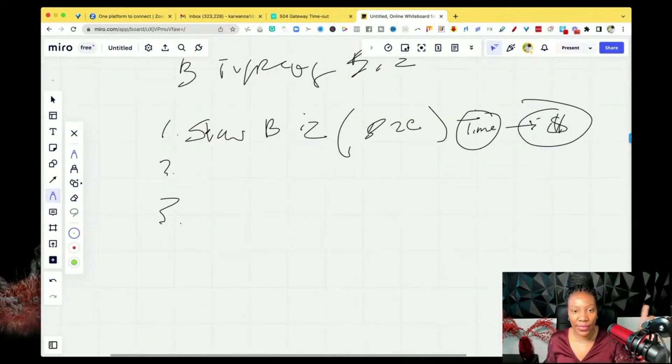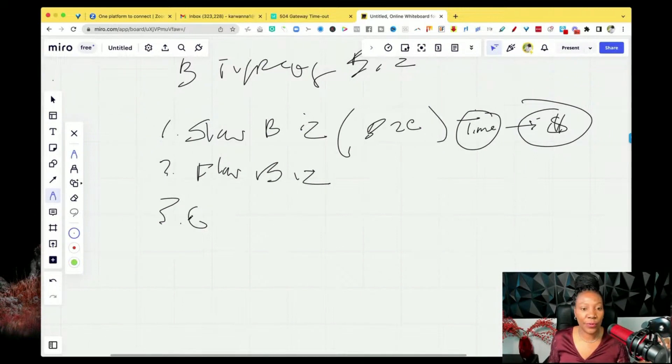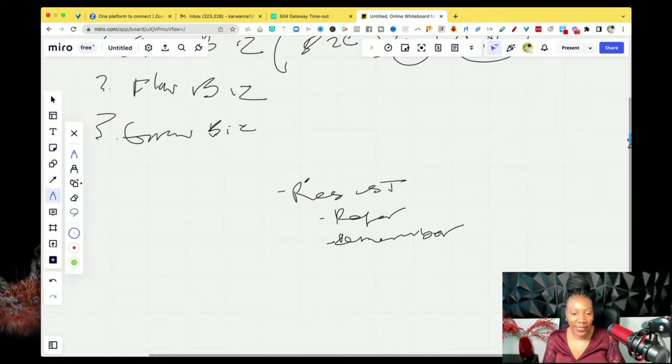Now, slow biz is the first business model. There's a flow biz and then there is a grow biz. So slow biz, ideally getting back to the number one, there's three things that you want to do when it comes to the slow biz. You want to resist, you want to refer, and you want to remember. Three things you want to ideally do.